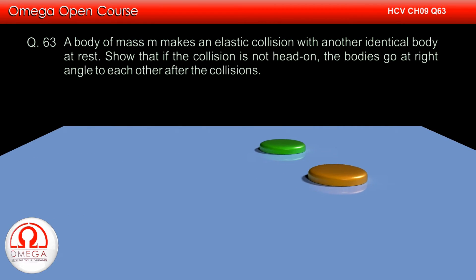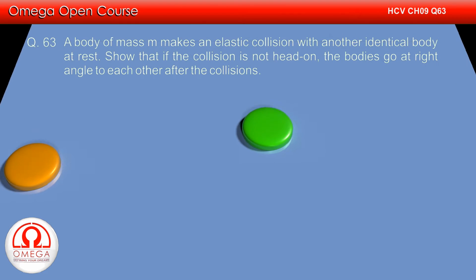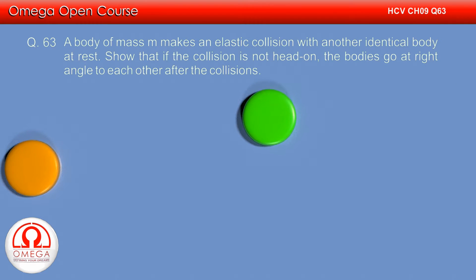A body of mass M makes an elastic collision with another identical body at rest. If the collision is not head-on, the bodies go at right angles to each other after the collision.